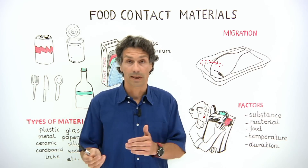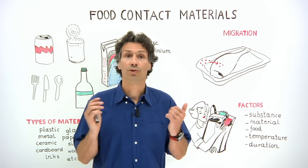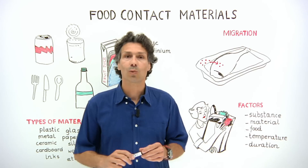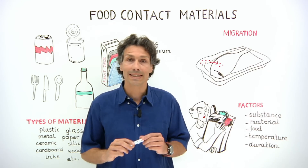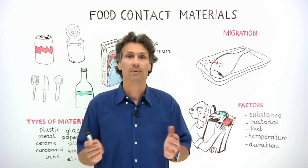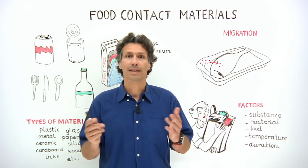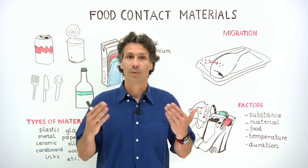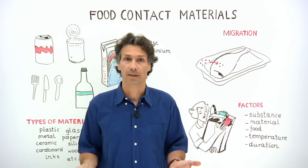If it does migrate, the safety evaluation must ensure that consumer exposure will not trigger any adverse health effects. That's why scientists also determine the level at which substances can migrate into food without posing a risk to the consumer. Once scientists have assessed the level of risk, it is then up to regulators to decide whether they should be authorised for use in the food chain.